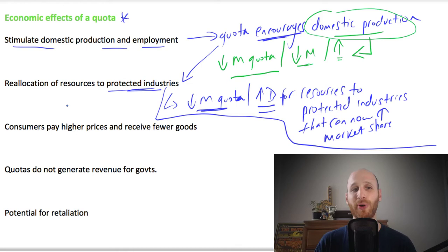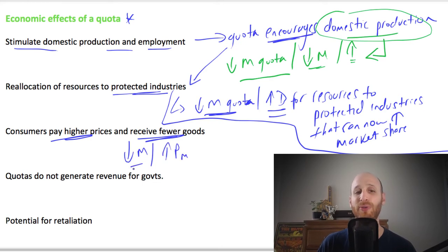Another effect of a quota is that consumers will pay higher prices and receive fewer goods. Because if there are fewer imports, then that price is going to go up for goods. So if there are fewer imports being let in, that will increase the price of imported goods.